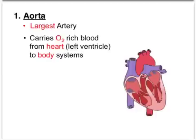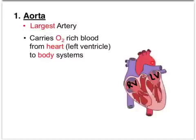The first blood vessel we're going to take a look at is the aorta. The aorta is the largest artery within our body and its role is to carry oxygen-rich blood from the heart, specifically from the left ventricle. The left ventricle is going to pump blood out of its chamber and into the aorta. This is the beginning of the aorta.